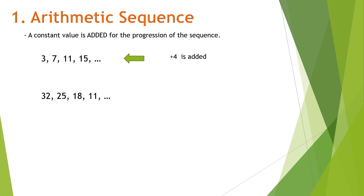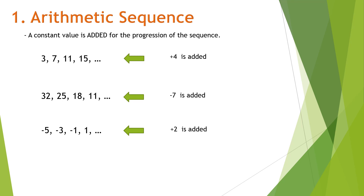Another example: 32, 25, 18, 11. A number is being subtracted, but we can express that as a negative number being added — specifically negative 7. Another example: negative 5, negative 3, negative 1, 1. A number is being added. The correct answer is positive 2, since negative 5 plus 2 gives negative 3, negative 3 plus 2 gives negative 1, and negative 1 plus 2 gives positive 1.